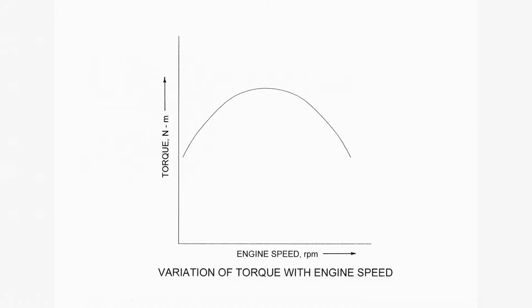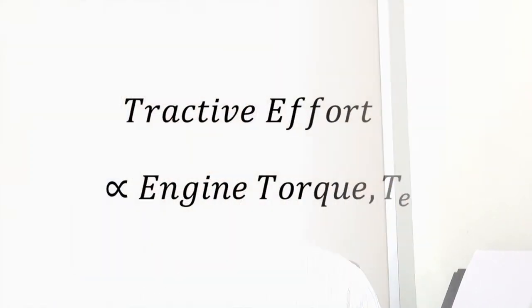This relationship was represented graphically as shown in the diagram. The nature of the curve remains the same even if some other type of engine is considered. The two parameters represented are engine torque in Nm and engine speed in RPM, which is the rotary speed of the crankshaft. We have already established that tractive effort is proportional to engine torque.